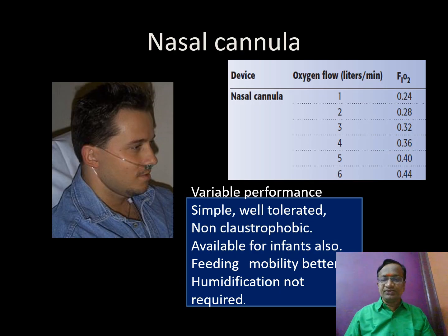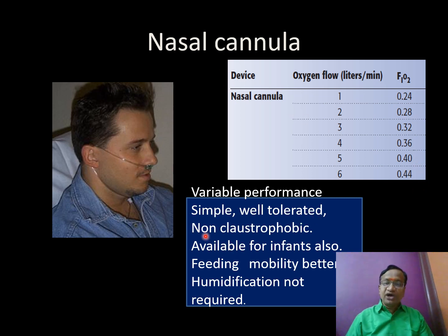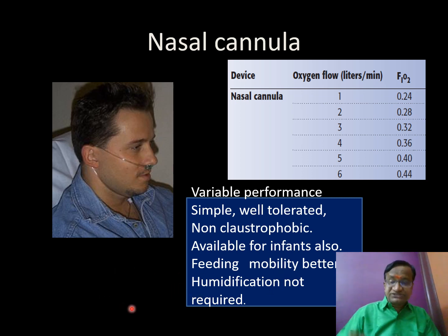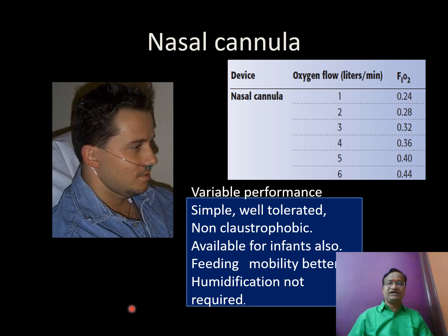This is the nasal cannula: at 1 L/min ~24% FIO2; up to 6 L/min you can attempt ~40%. It is a variable performance device — simple, well tolerated, non-claustrophobic, available for infants, feeding and mobility are possible, and humidification is not required because it uses the natural humidification of the nose.